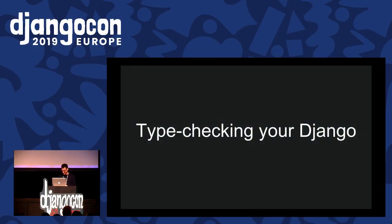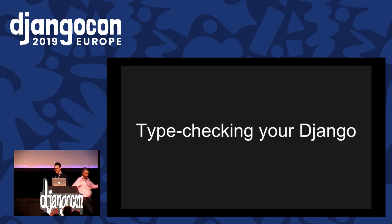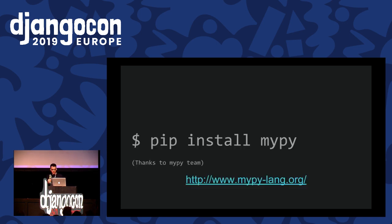We will continue the story of Juan after Seth Yastrov talks to us about type checking your Django. I'm going to talk about type checking your Django project. Python has had type annotations added since Python 3, and you can also put type annotations in Python 2 code with type comments.